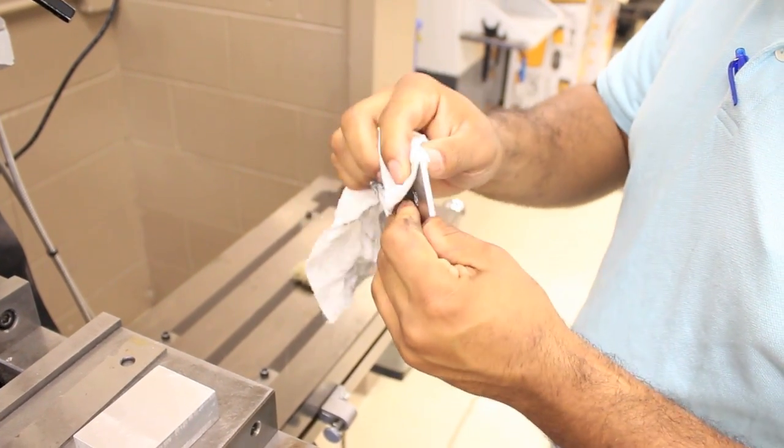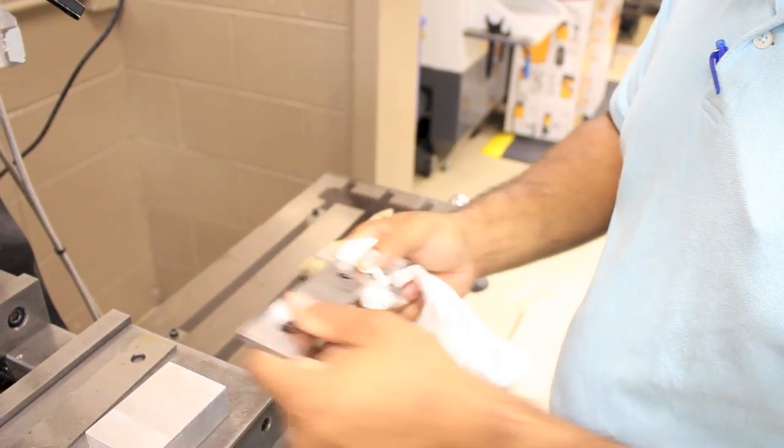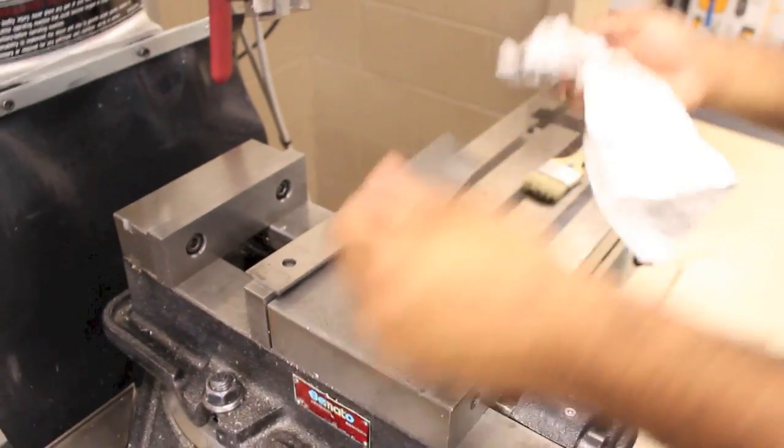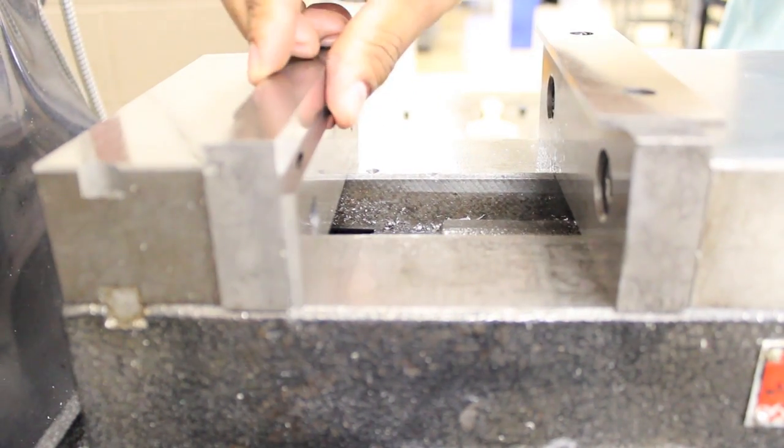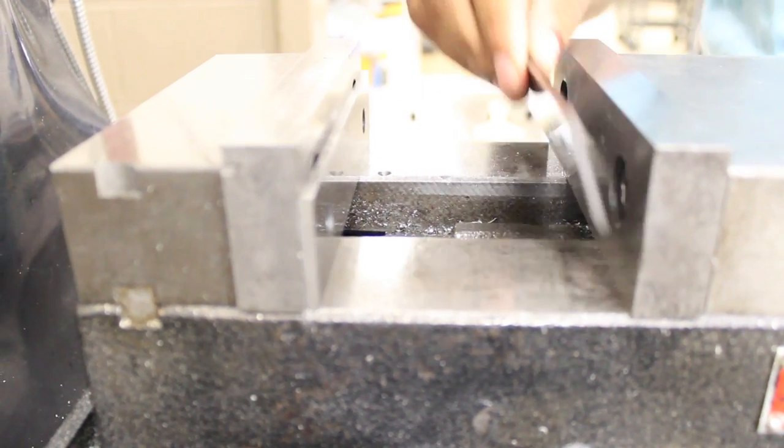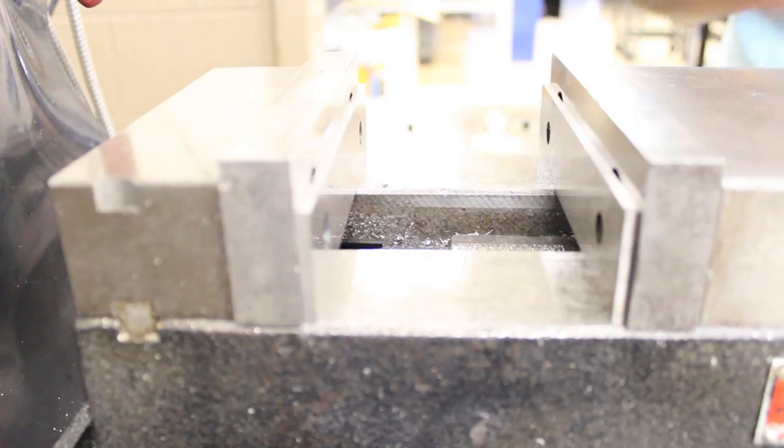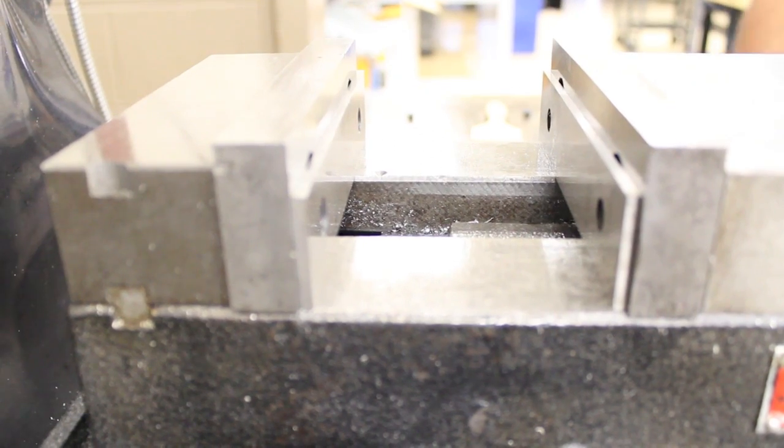Creating a work zero is an essential step in the setup of a workpiece. Keep in mind that a work zero may be placed at any point along the x and y travel of the milling machine, but in most cases machinists will work off a square corner of a workpiece.